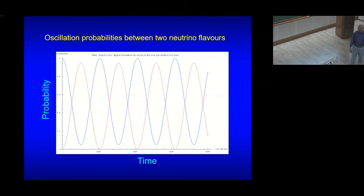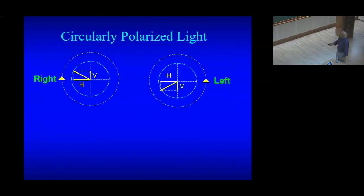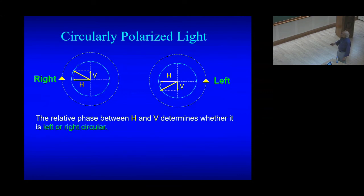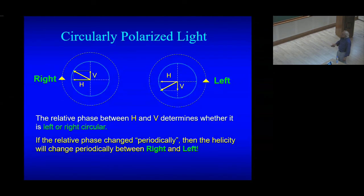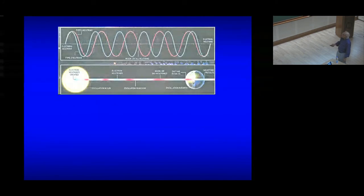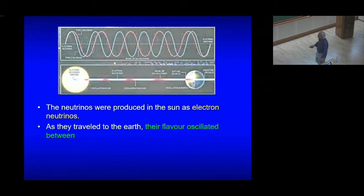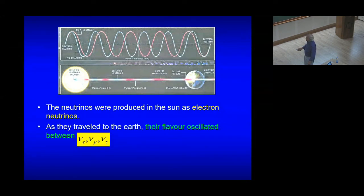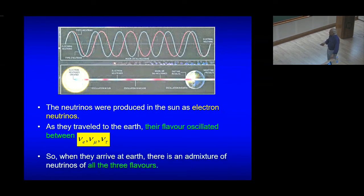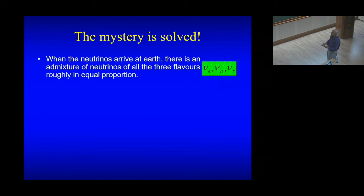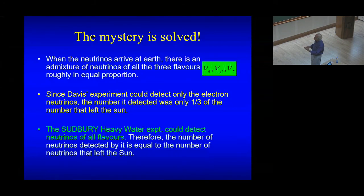This is the phenomenon of neutrino oscillation, illustrated for the case of two flavors. The neutrinos were produced in the sun as electron neutrinos. As they traveled to the Earth, their flavor oscillated between muon neutrino, tau neutrino, and electron neutrino. So when they arrived at the Earth, there was an admixture of neutrinos of all three flavors. Davis's experiment could only detect electron neutrinos, whereas the Sudbury heavy water experiment could detect all neutrinos, and it found the remaining two-thirds.